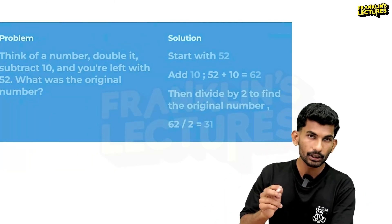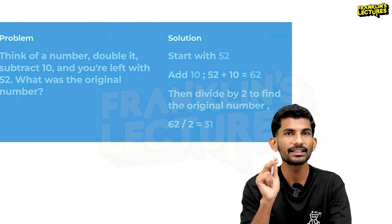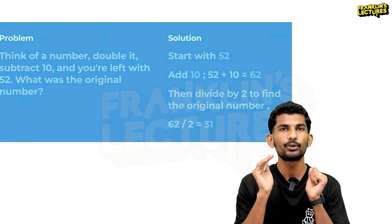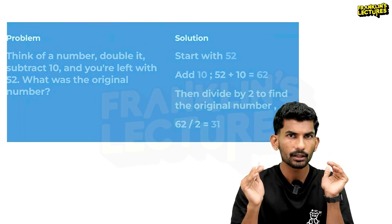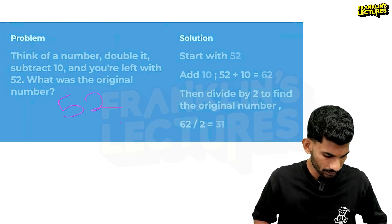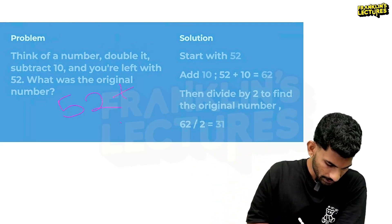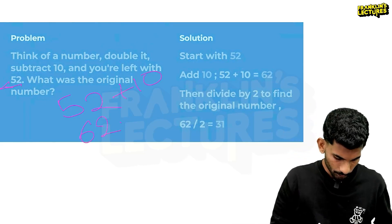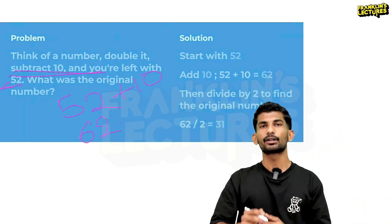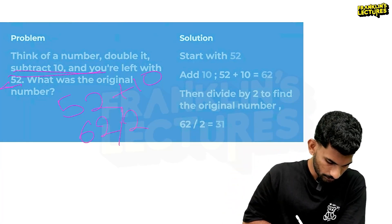Here is an example. Think of a number, double it, subtract 10, and you are left with 52. What was the original number? Using the backtracking approach: we start at 52. The next step reverses subtract 10, so we add 10: 52 plus 10 equals 62. Then we reverse double it, so we divide by 2: 62 divided by 2 equals 31. That is the backtracking approach.